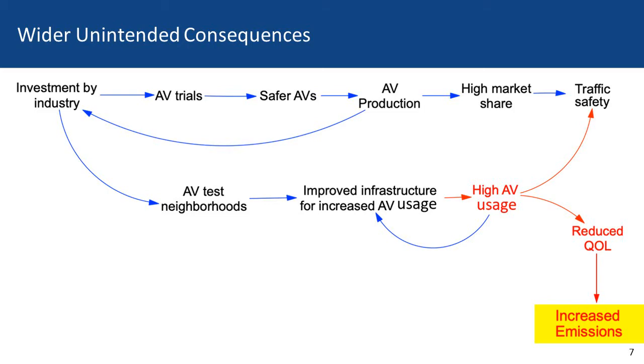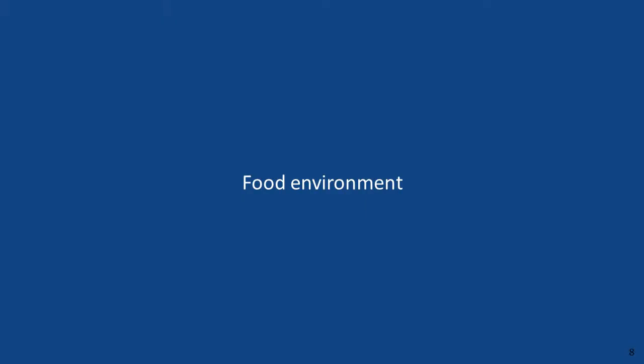Finally, with this high traffic load of AVs operating in improved infrastructure, we're going to actually get increased emissions. I could keep going with the AV example, but we're going to move on to the other two examples. Next we'll look at the food environment.